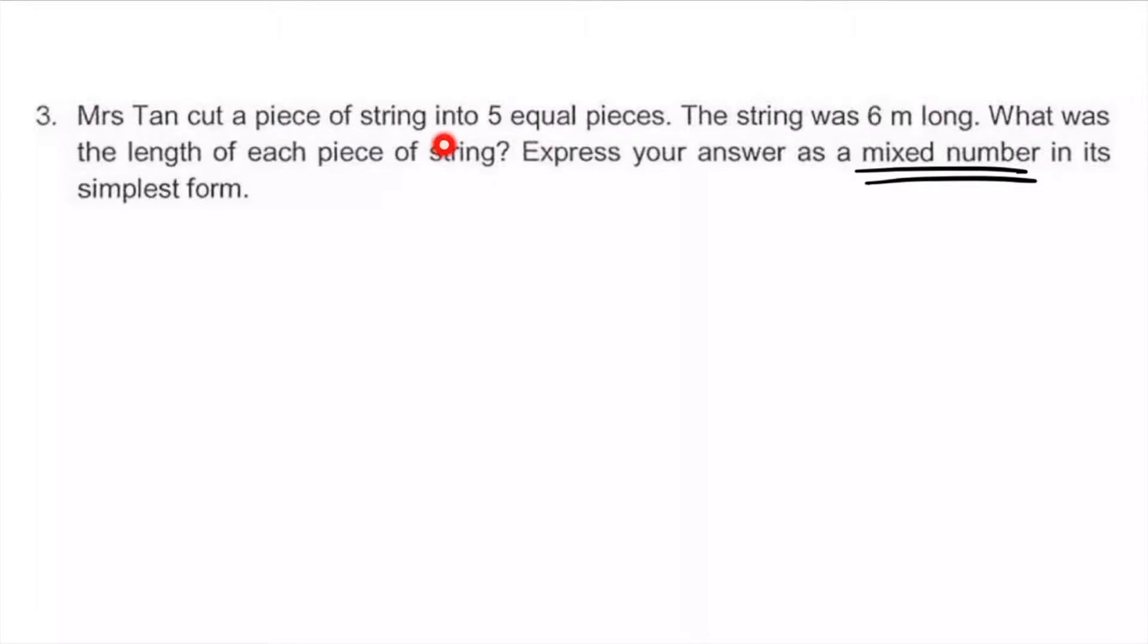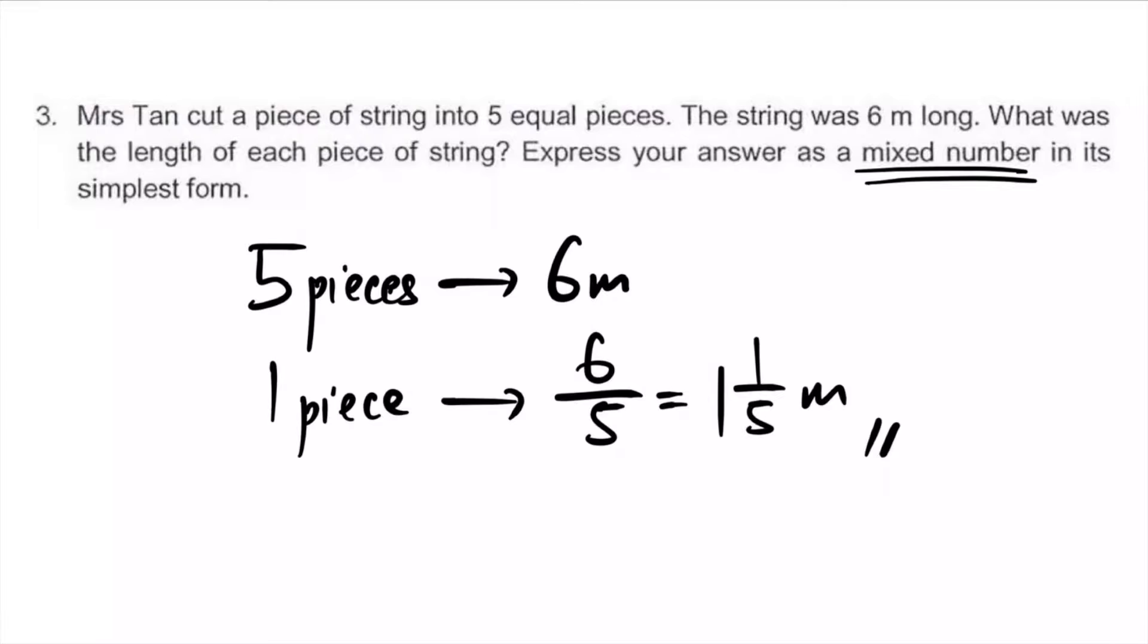Mr. Stahn cut a piece of string into five equal pieces. The string was six meters long. We want the length of each piece. Special requirement: answer as a mixed number. Five pieces, six meters, one piece divided by five is one whole and one fifth.